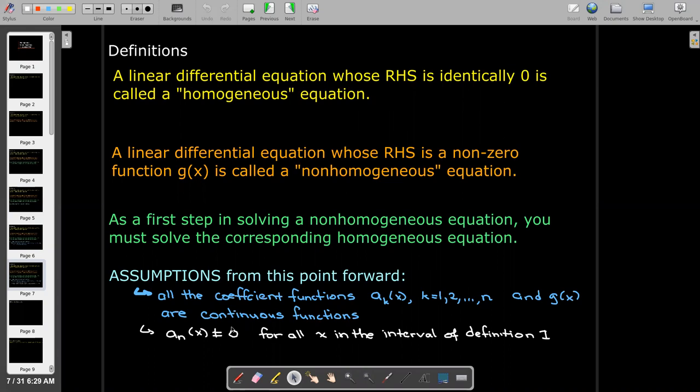And if you recall, those conditions are enough with our initial value problem. If x naught is also in the interval of definition, those conditions guarantee that we're going to have a unique solution.